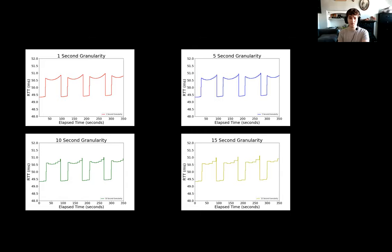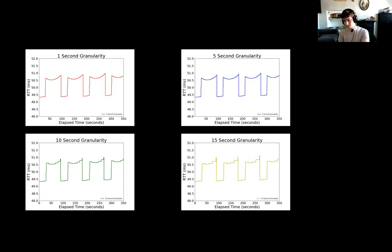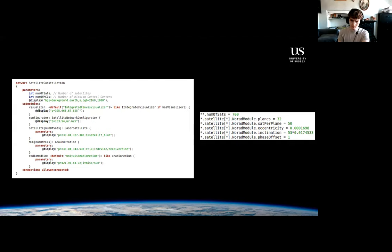The routing granularity also affects result accuracy. If you run the configurator more frequently, latencies are a lot finer and more accurate. As granularity increases to around 15 seconds the results slightly degrade. For just figuring out latencies this is acceptable, but if you ever want to test actual transport protocols you definitely need a lower routing granularity, otherwise you get unwanted results.